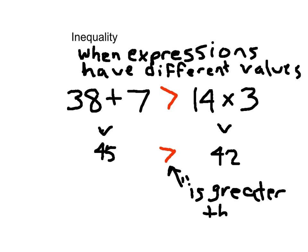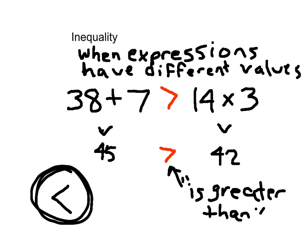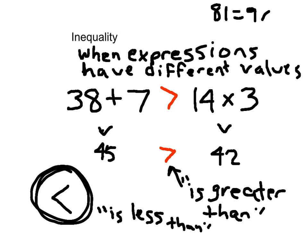Do you remember the symbol for is less than? Write it in the air. That is read: is less than. And again, so if we write a number sentence, instead of writing 81 is equal to 9 times 9 — that's an equation — if we write an inequality where they are not equal, we can write that they are greater than, we can write is less than, or we can even use this symbol here. This symbol is read: is not equal to. For the most part, most of the time you're going to use the less than and greater than symbols.